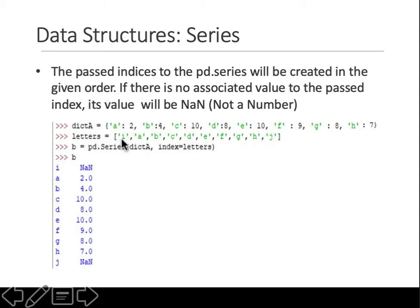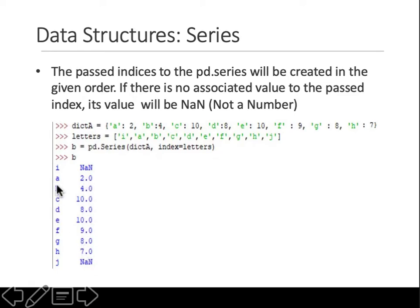The series goes through a, b, c, d all the way to h — all those values are filled in. When it gets to 'j', which is also not in the dictionary, you get NaN for 'j' as well. So if there is no associated value for a passed index, its value will be NaN — NaN at the top for 'i', NaN at the bottom for 'j', and the rest are the same.